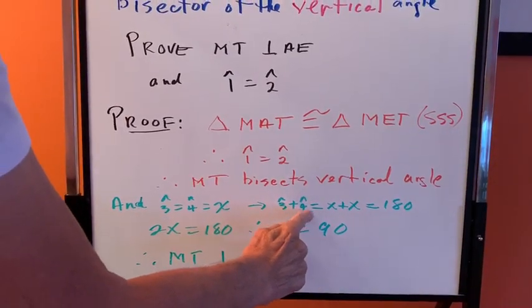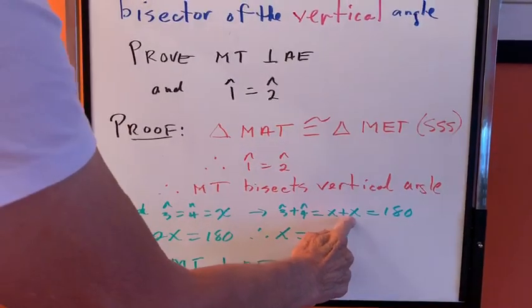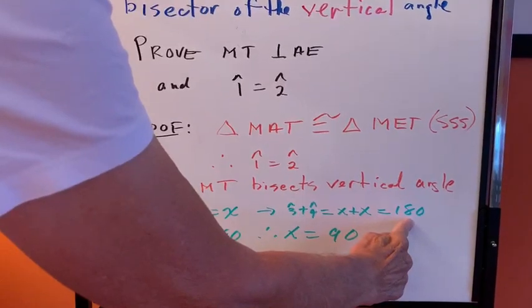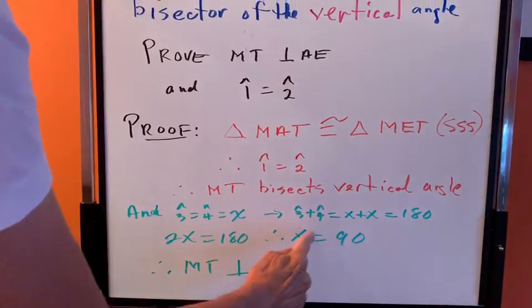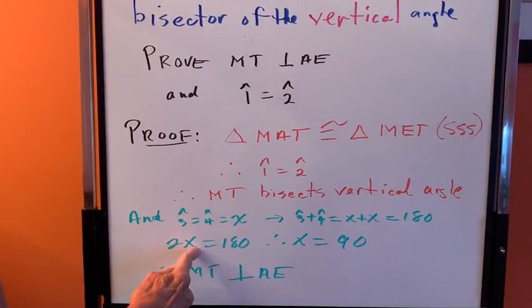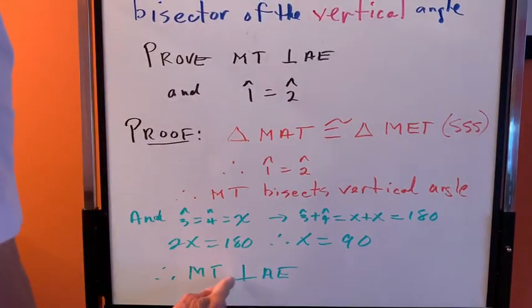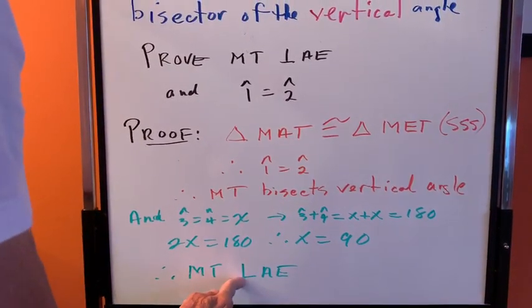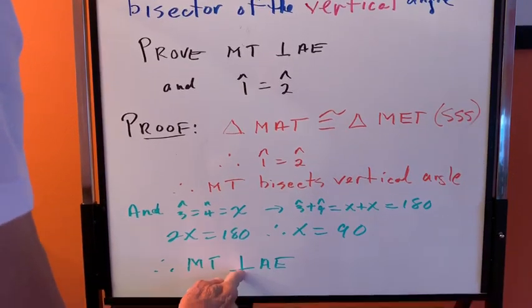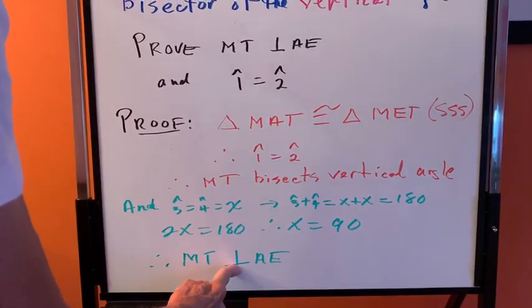Therefore, three plus four is equal to x plus x, and the straight line is 180. And 2x is 180, therefore x is 90. And therefore MT is perpendicular to AE, or we say it bisects the vertical angle.